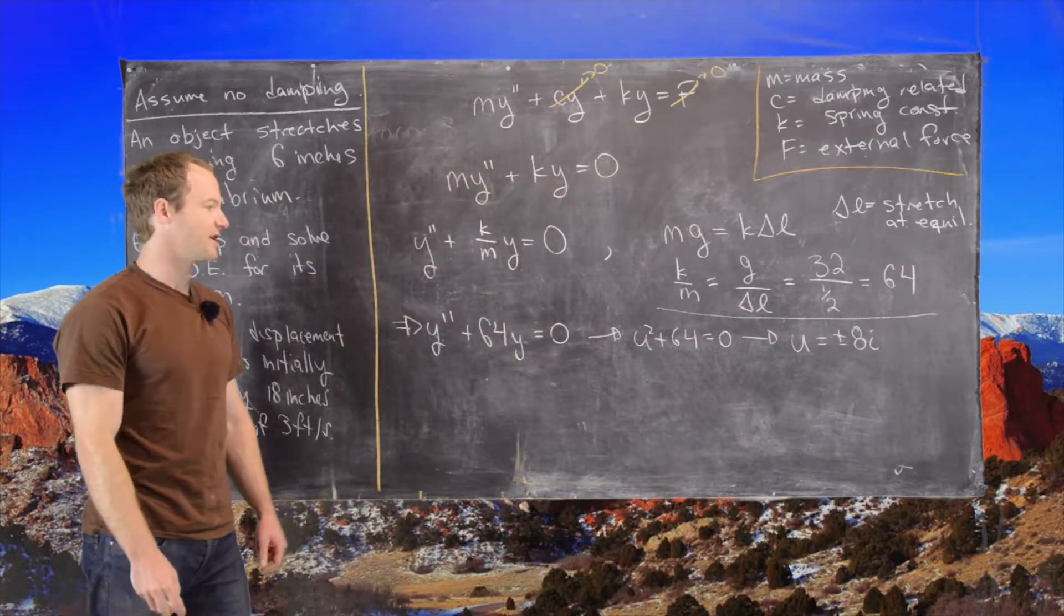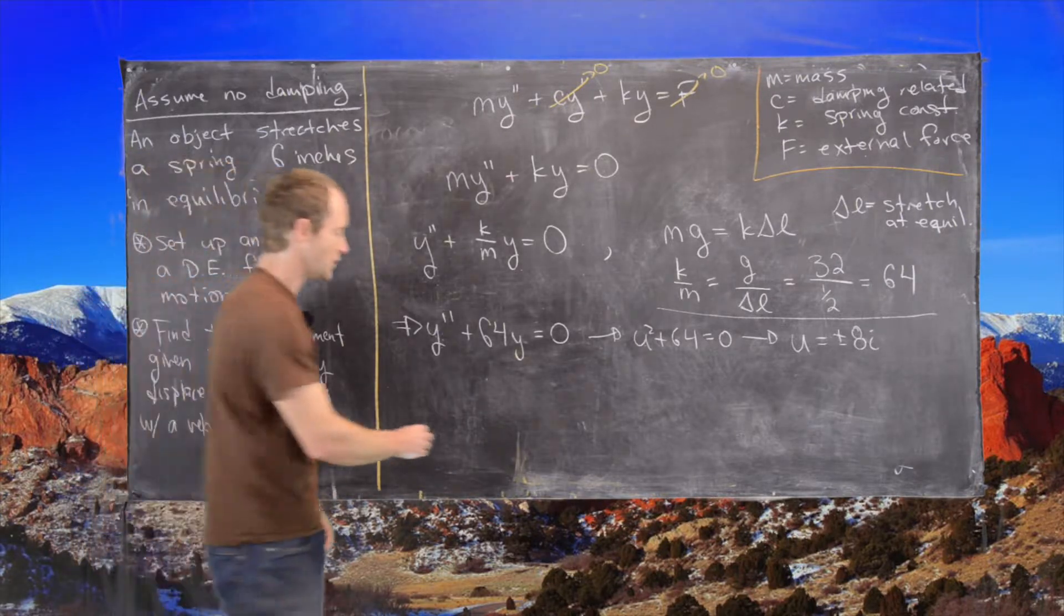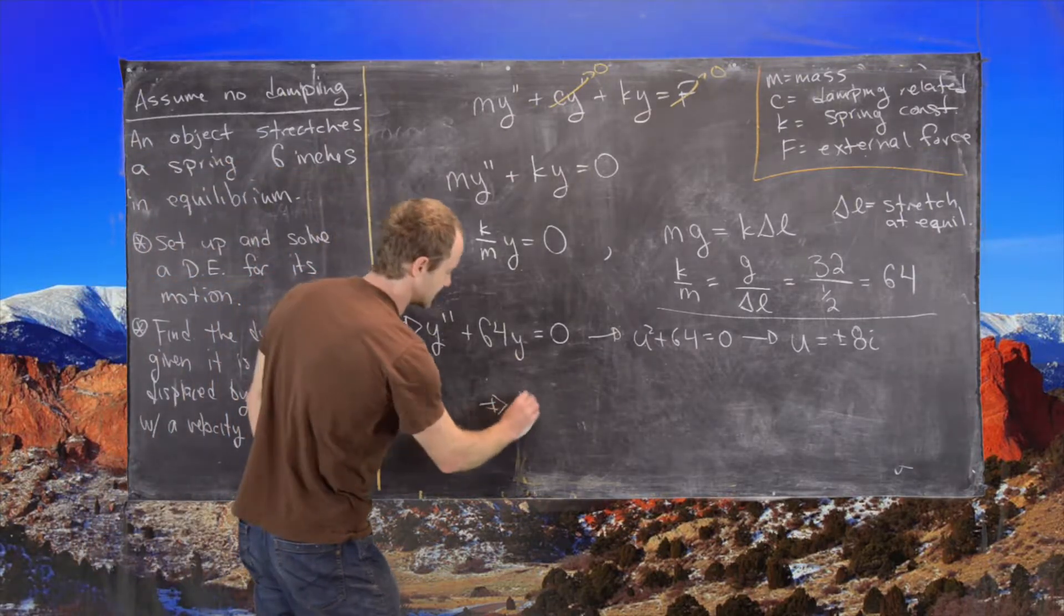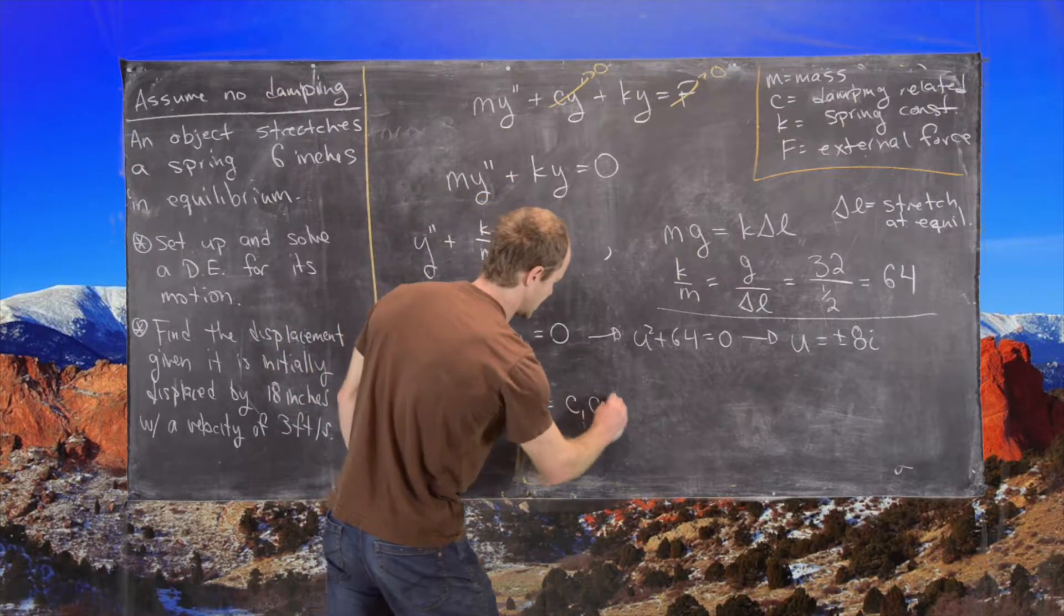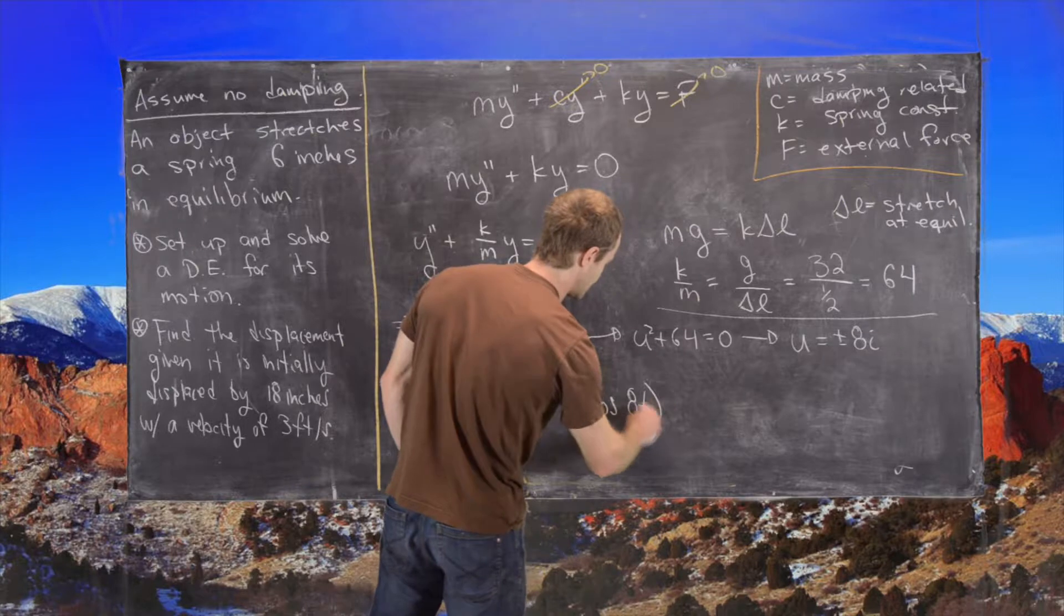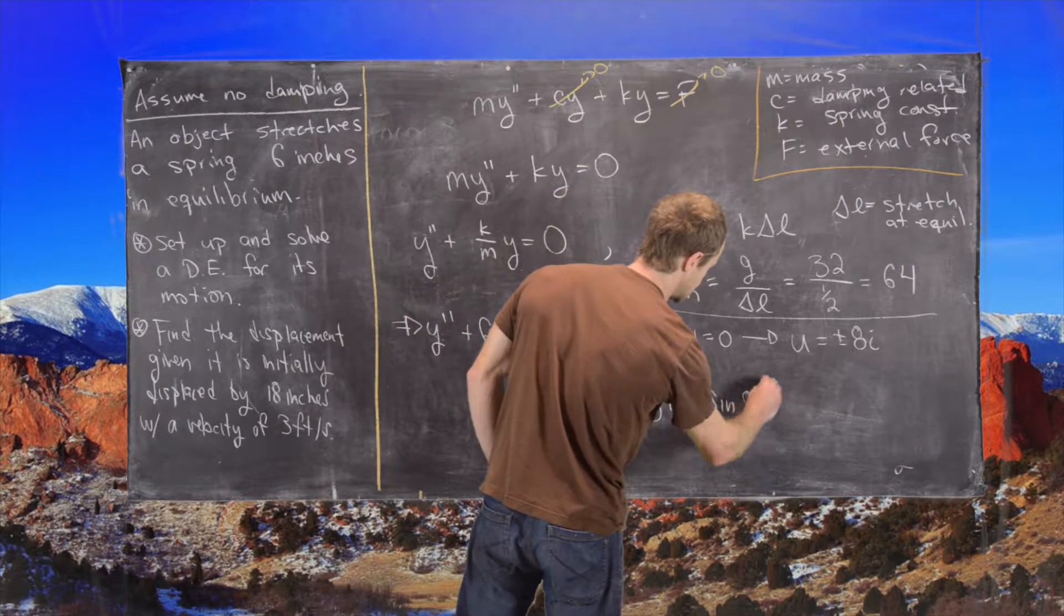And then from the theory of homogeneous second order linear differential equations with constant coefficients, we know that that tells us that y equals c1 cosine of 8t plus c2 sine of 8t.